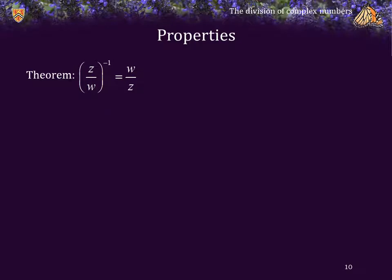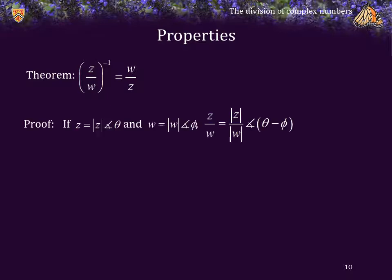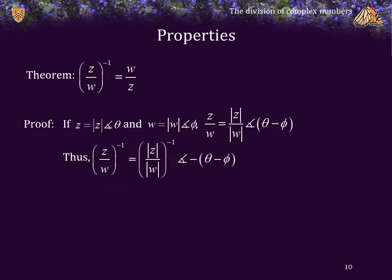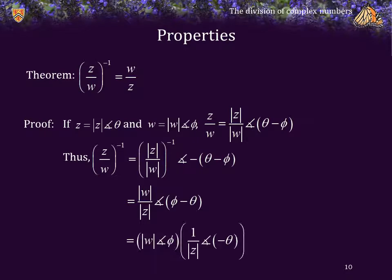Theorem: the multiplicative inverse of z over w is w over z — as you'd expect from high school. Using the polar representation, if z is its magnitude phase theta and w is its magnitude phase phi, then z over w is the expression shown. The multiplicative inverse of that is the reciprocal of the ratio of the magnitudes phase the negated difference of the angles, which simplifies to the magnitude of w over the magnitude of z phase phi minus theta. That is just w divided by z.